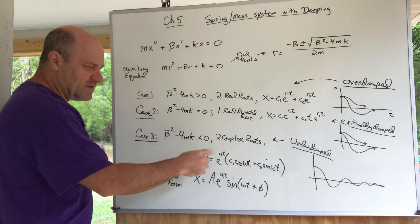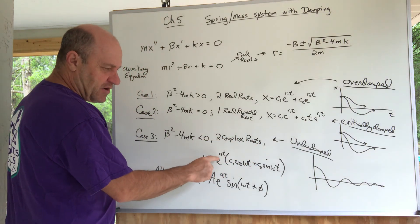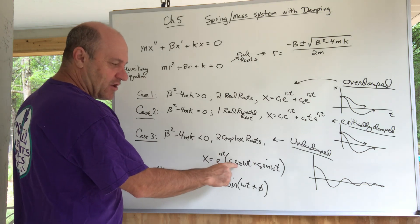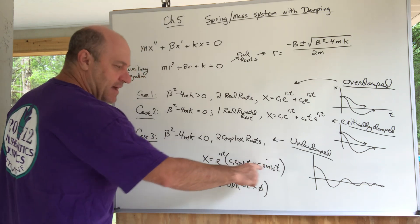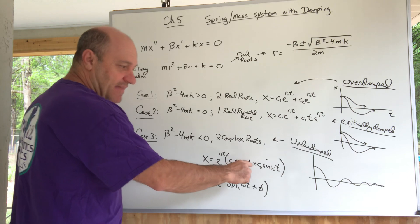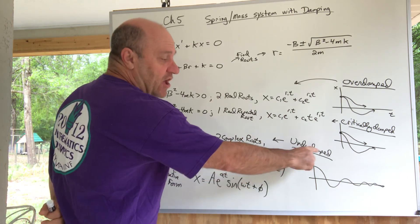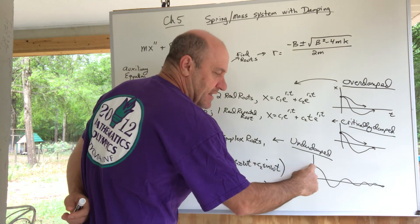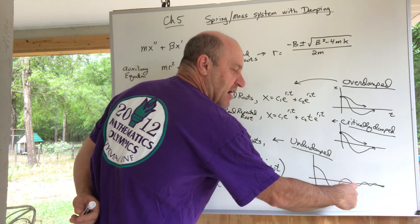Two complex roots—I use some different numbers here, but that's e to the at and cosine omega t, sine omega t. You know what happens with two complex roots. That's called underdamped—that's the least damped situation. Look what it does: it oscillates forever, but it oscillates with this diminishing amplitude.